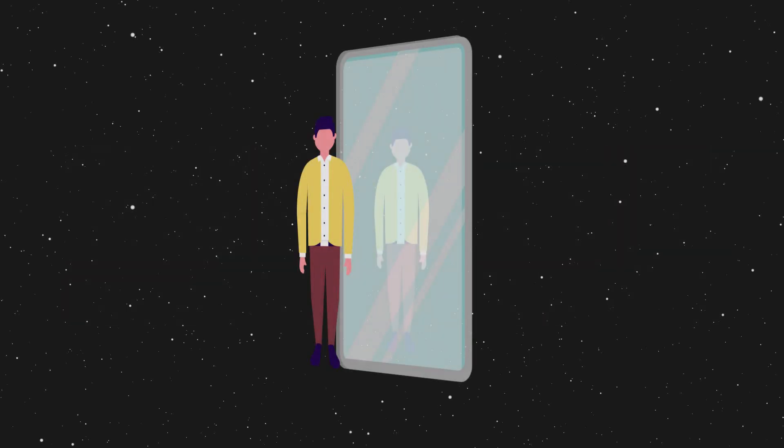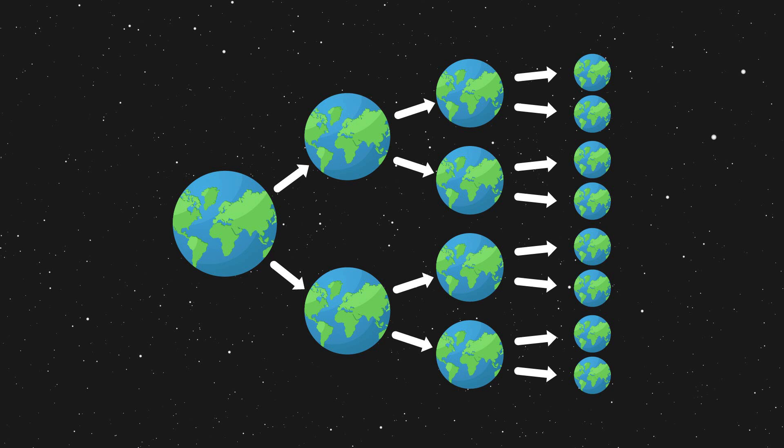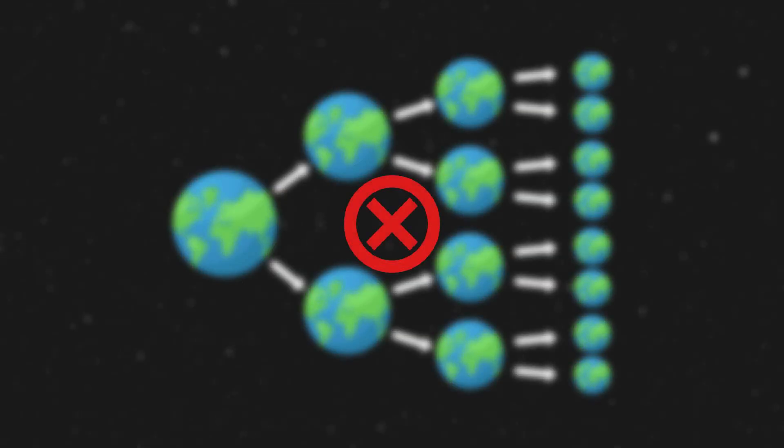The problem of the multiverse interpretation is that it does not seem to fit with our experience because we have no idea of the other versions of ourselves. And there is no link among these parallel universes, so the multiverse interpretation is not testable.